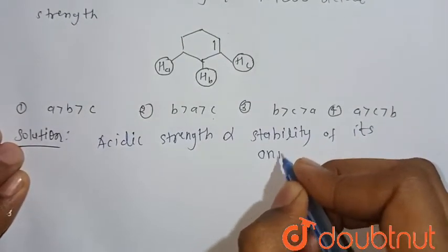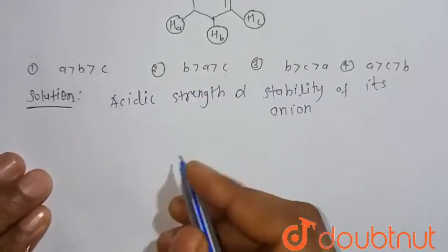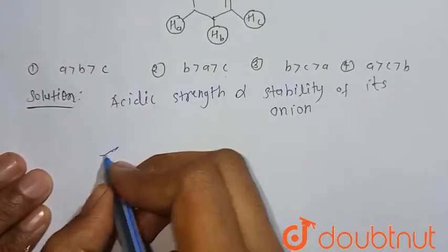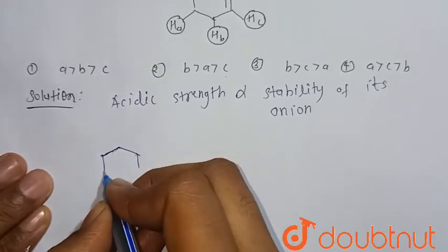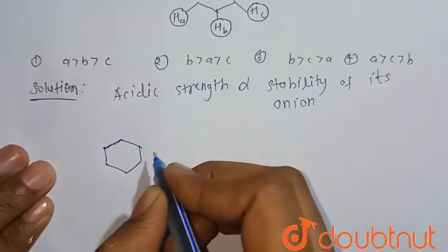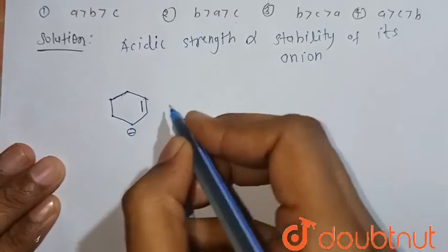So consider the stability after releasing of the H. The most stable carbanion is this, after removal of the hydrogen that is B hydrogen.